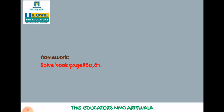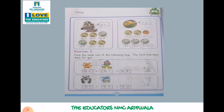This is your homework assignment. Solve book page number 80 and 81. This is your book page number 80: 10, 5 and 5 is 10. 15 — count करेंगे हैं: 5 plus 5 plus 5 is 15.